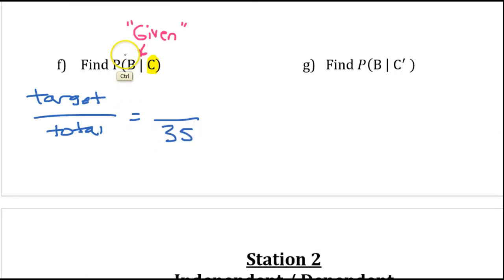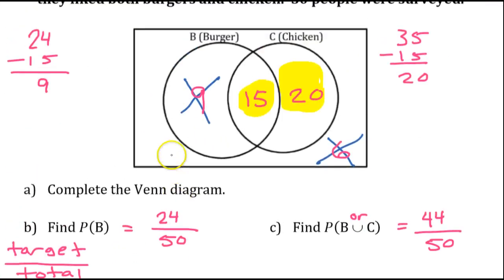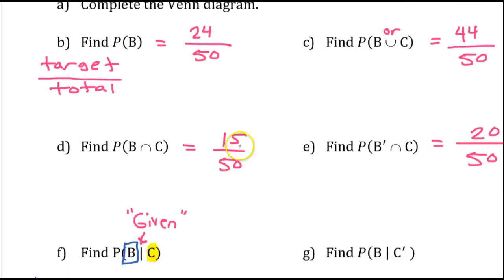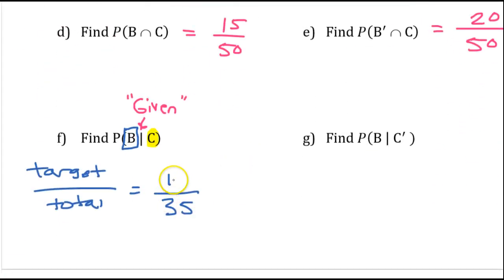Now, we're supposed to find the probability of B using our new numbers. So, the target will be the B part that's left. Which of these numbers is B? It's the 15. The 15 is part of the B circle. 15 of these people do like burgers. So, 15 is the target. But, instead of 15 out of 50, it's 15 out of 35.